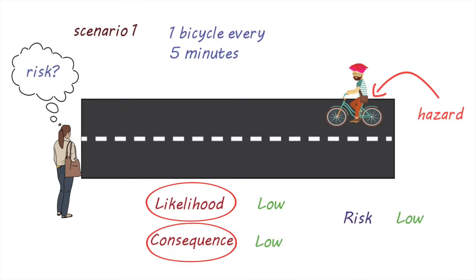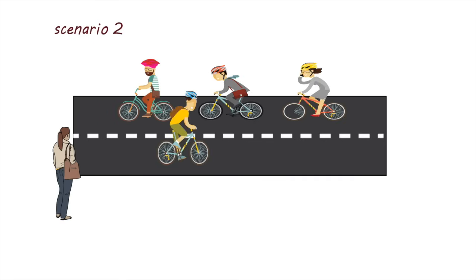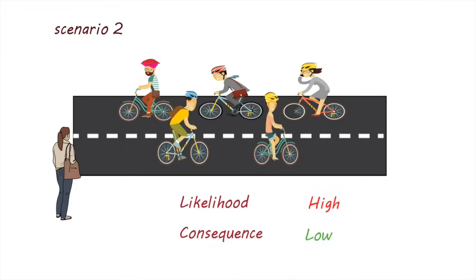Now obviously if there are bicycles traveling more frequently, the likelihood of a crash would be higher, but the consequence if a bicycle did crash into you would still be low.